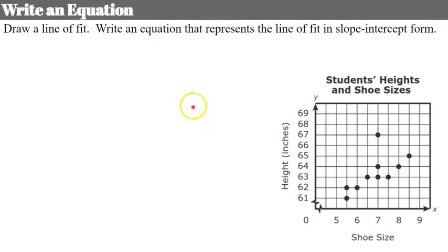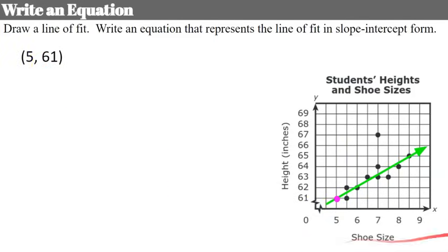Here we're going to draw a line of fit. I ignore the outlier and draw my line with three points above it and three points below it. I identify two points on my line: the first is (5, 61) and the second is (8.5, 65). Notice both points are on my trend line, my line of fit.